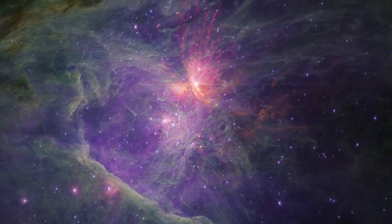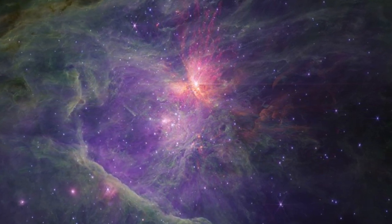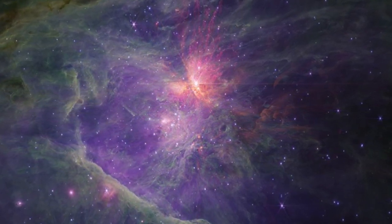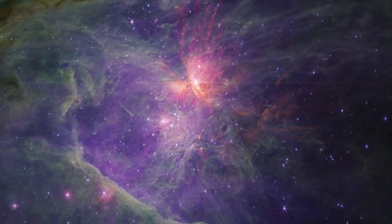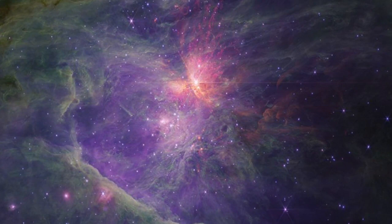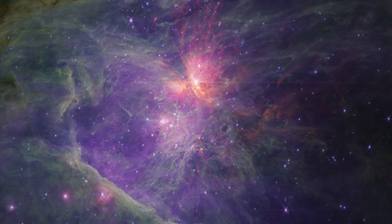Dozens of Jupiter-sized objects have been found floating free through the vast nebula, unattached to any stars. Yet, and here's the interesting part, they're orbiting around each other in pairs.